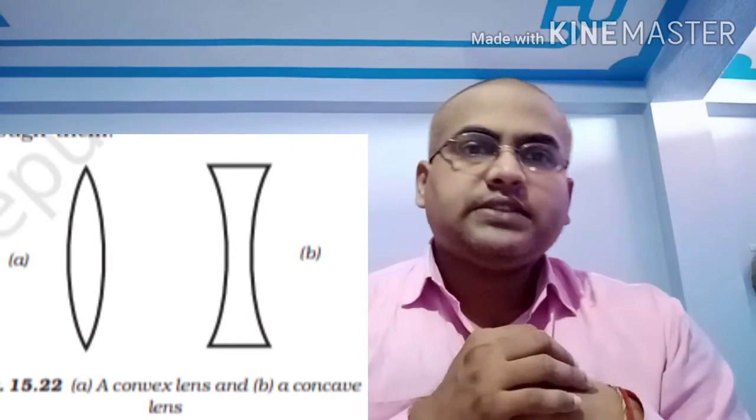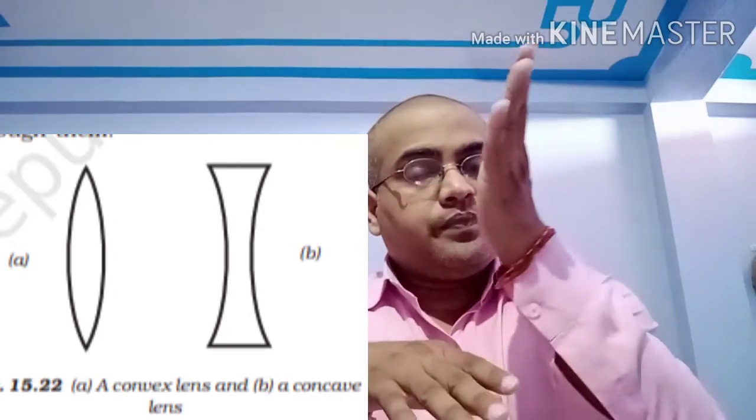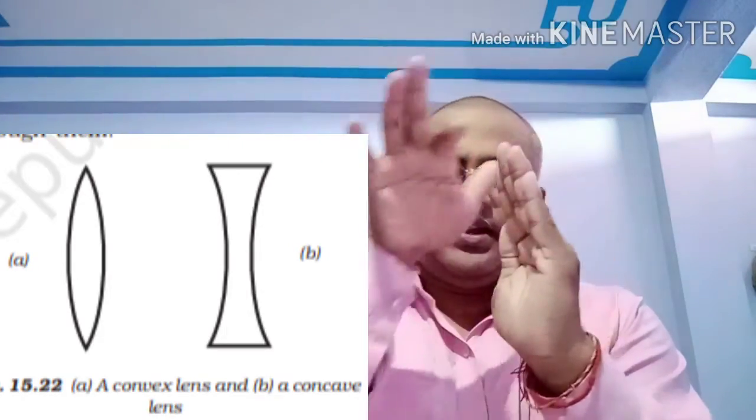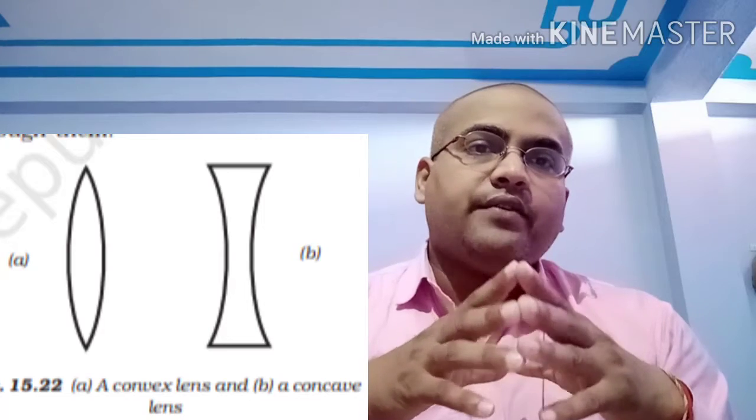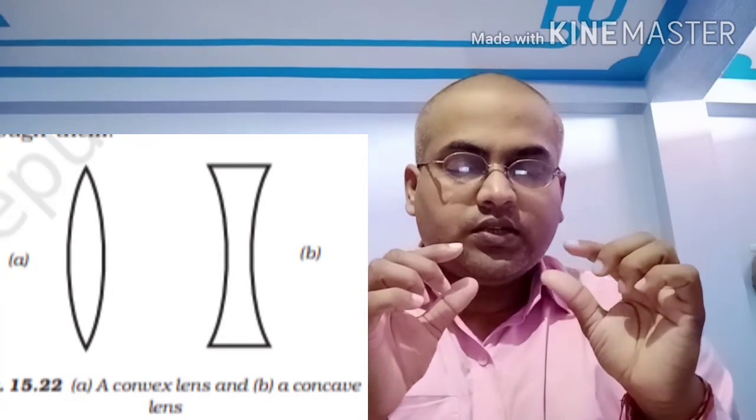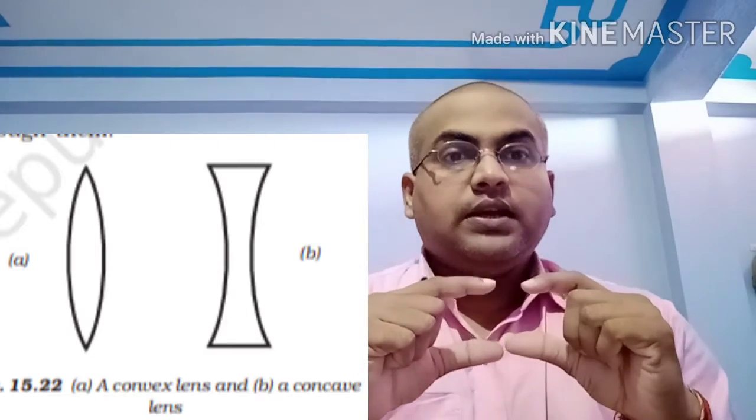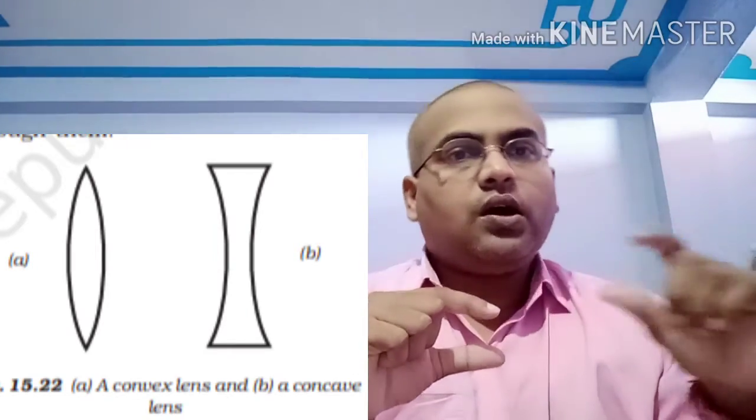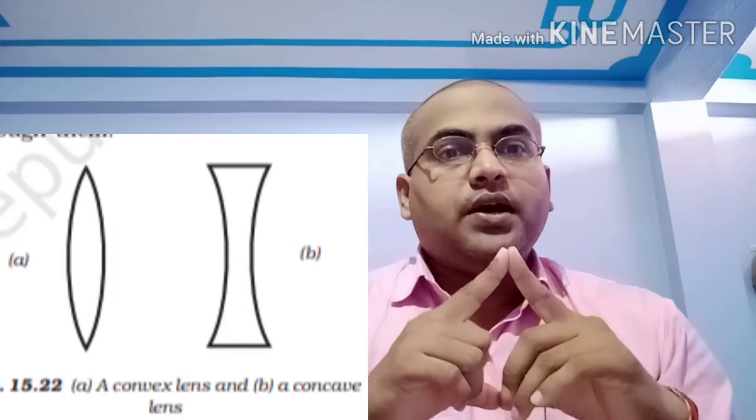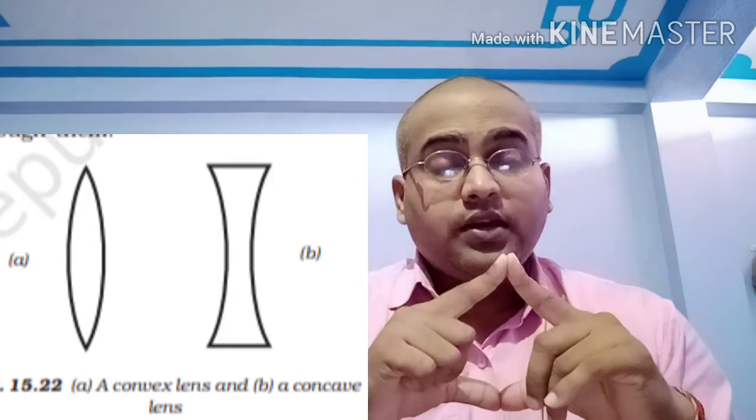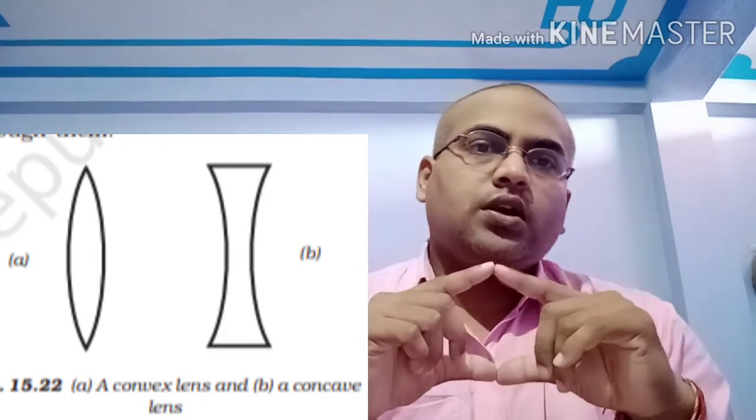Just opposite of that, if any lens which have a cave-like structure in the middle, it means it is a concave lens. Those lenses which have a thicker portion in the middle than the edges, it is called a convex lens. But if a lens is thinner in the middle portion and thicker in the edges, it is called concave lens.